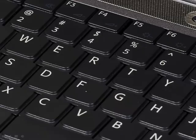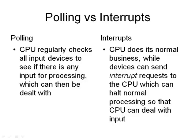A keyboard is obviously a very standard and simple form of input for computer programs. There are two key forms of input: polling and interrupts. With polling, the CPU regularly checks all input devices to see if any have data to process. With an interrupt, the CPU goes about its normal business, and when a device sends an interrupt signal, the CPU halts its normal processing and deals with the input.